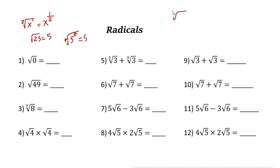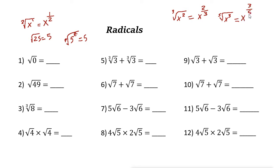For example, if you have the cubic root of x to the power of 2, you can write it as an exponent. The root is the denominator part, so it is 3, and the power is 2. So it is x to the power of 2 thirds. If you have the fifth root of x to the power of 3, then written as an exponent it is x to the power of 3 fifths. The power is the numerator and the root is the denominator.